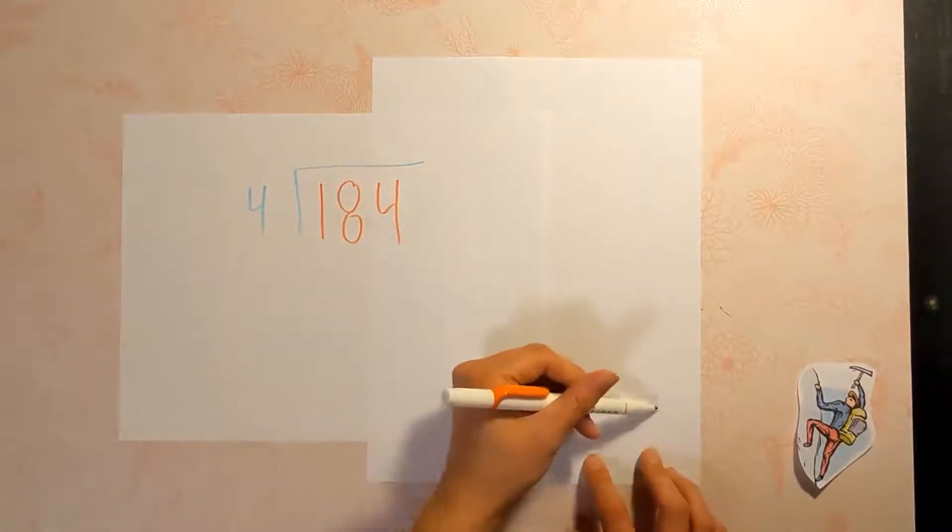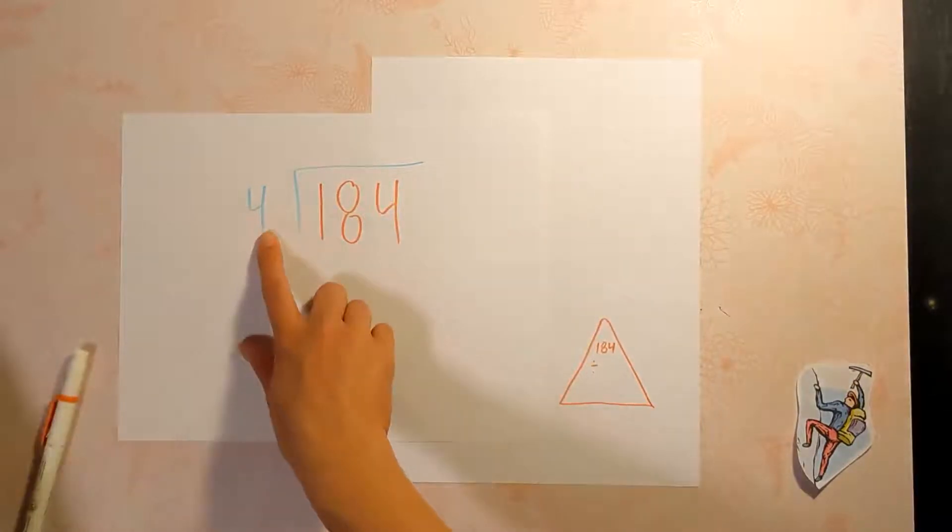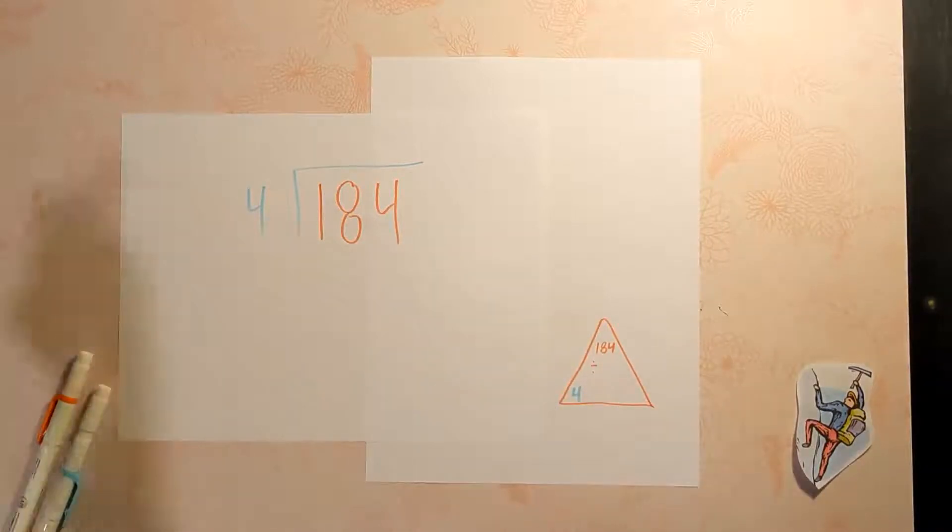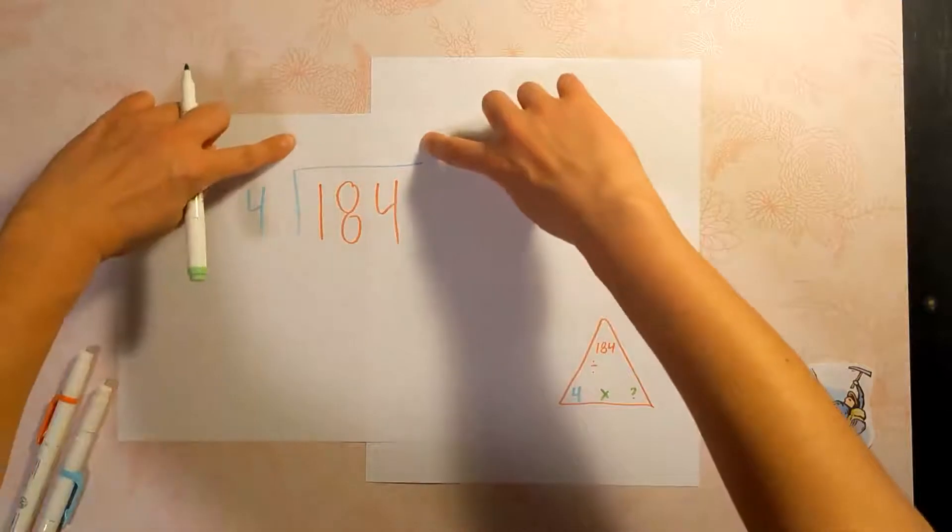This is the dividend, the number that's getting divided up at the top of the triangle. This is the divisor, the number that is getting divided by. And this here, the answer, is the quotient.